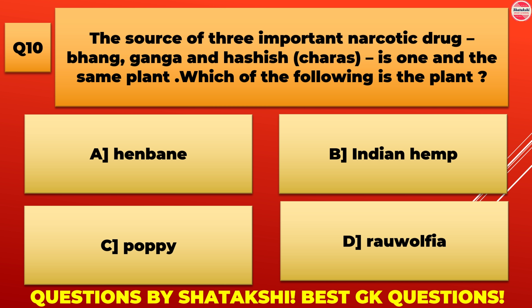The source of three important narcotic drugs — Bhang, Ganja, and Hashish/Charas — is one and the same plant. Which of the following is that plant? A. Hanbin, B. Indian hemp, C. Poppy, D. Raffia.